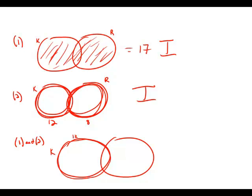Well that means that the outside of the circle, since there's 17 total, that means there must be five in this region here, the region of R that is outside of K. And so what that would mean is that since there are eight in R, there would be three here.